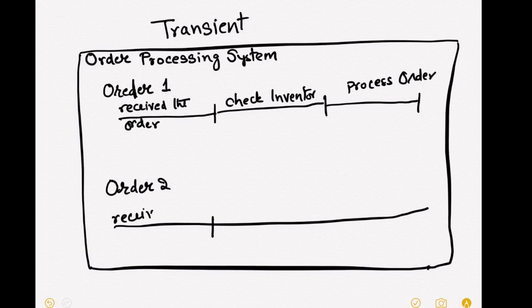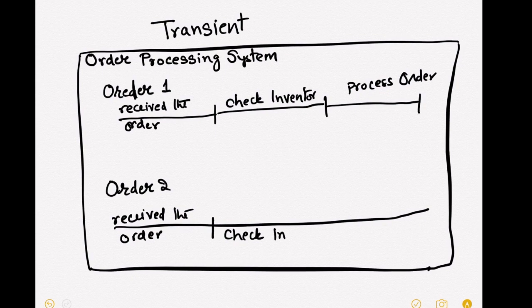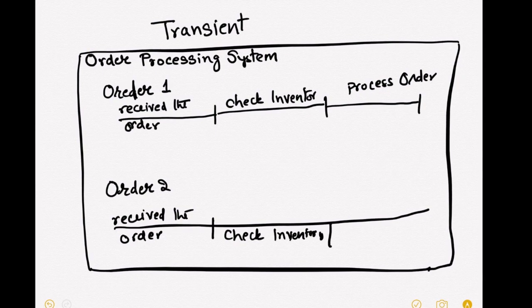And there's another request for order two. Same steps repeat: receive the order, check inventory, if inventory is good, process order.